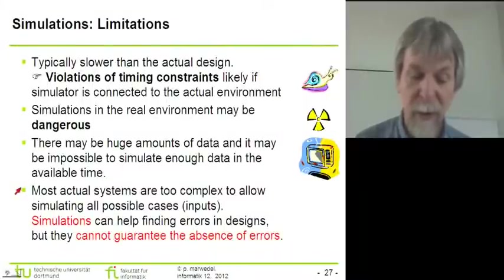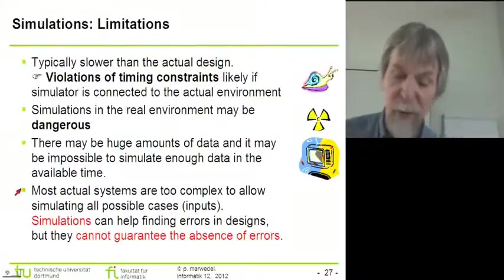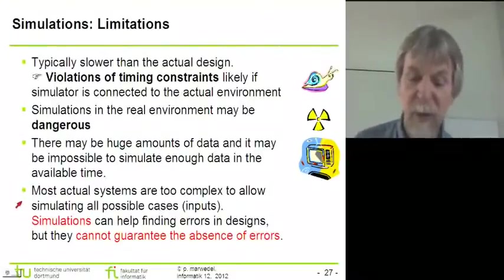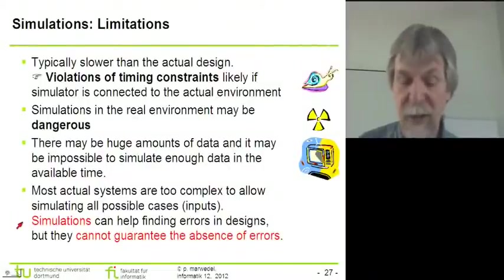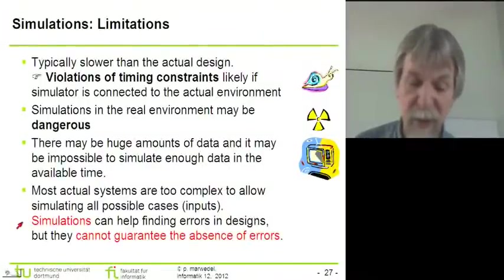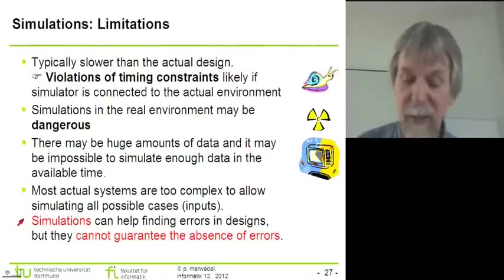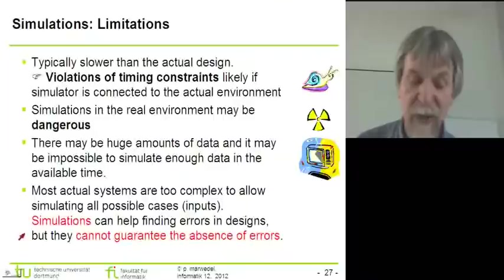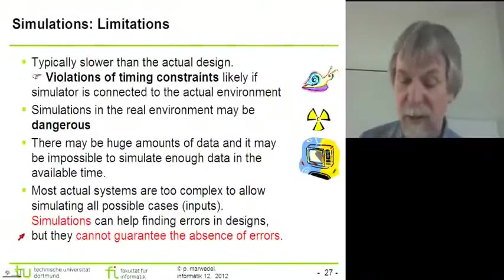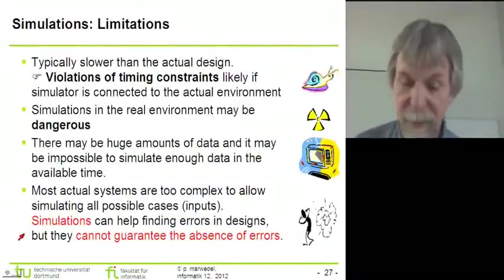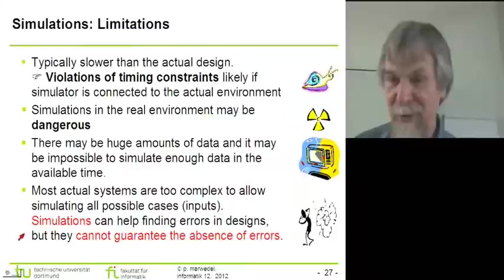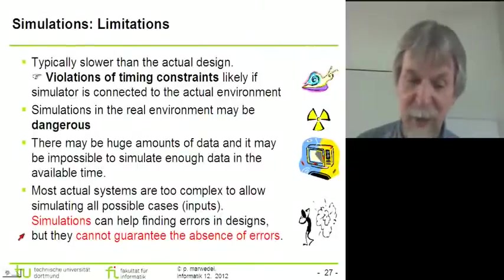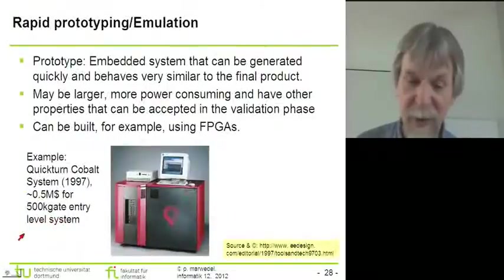This leads to the fourth observation: most actual systems are too complex to allow simulating all possible cases or all possible inputs. Therefore, as Dijkstra said many years ago, simulations can help find errors in designs, but usually they cannot guarantee the absence of errors. There is a certain risk if we try to use simulations for figuring out whether a system is working correctly.